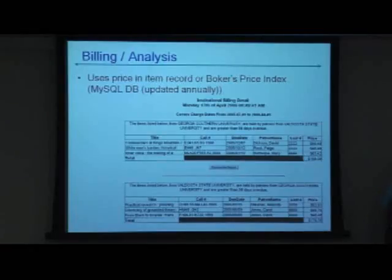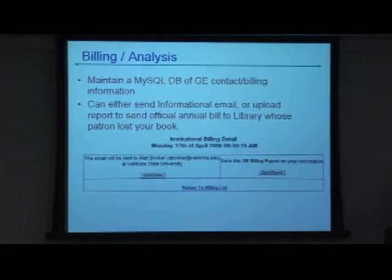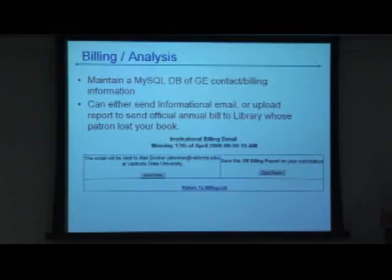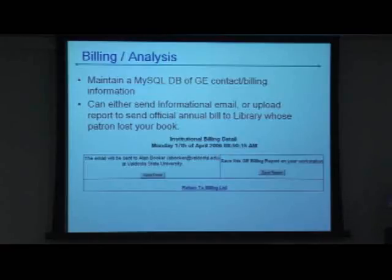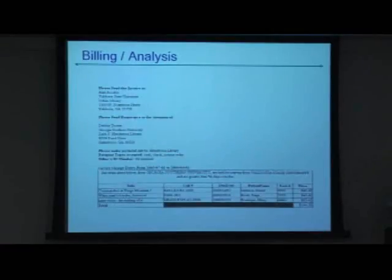Then they could click on 'process.' It would go to a screen where they could act on it. What we required was that they settled up within three months after the fiscal year ended. During the year, they could go in and run this and just send an email to the institutions that had patrons owing them money, just making them aware — okay, these patrons are being bad, you need to take care of it. At the end of the year, they'd come in and print off the report that they could actually send to the schools.